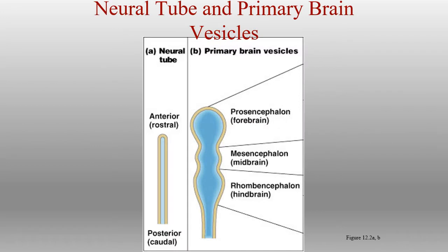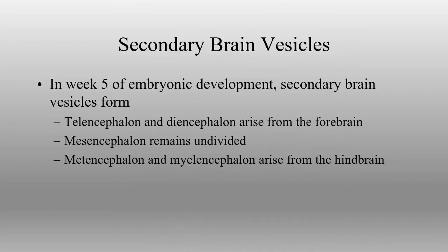The neural tube begins as our starting point for the nervous system — the most primitive form — and then we differentiate from there through development. The secondary brain vesicles are going to start to develop at week five of embryonic development. At week five, the different regions are going to get further and closer toward their adult form.